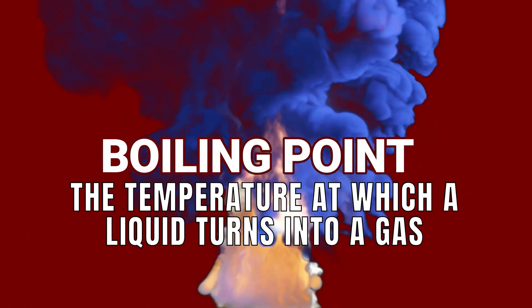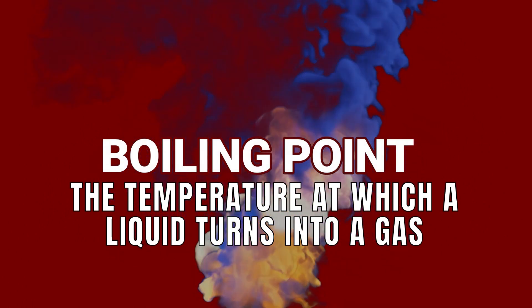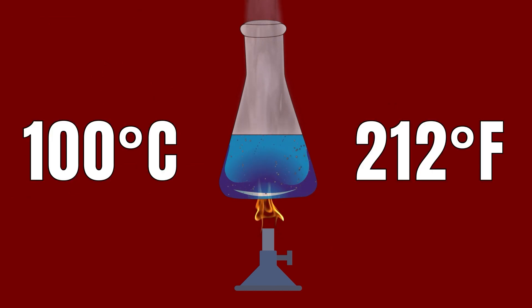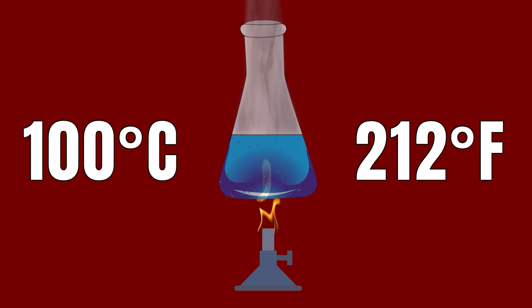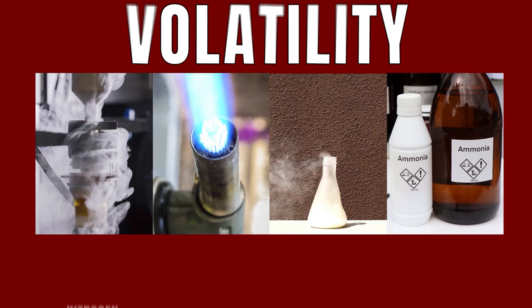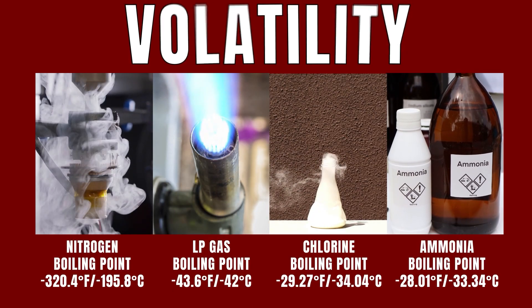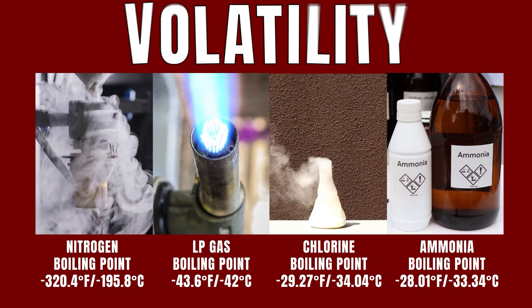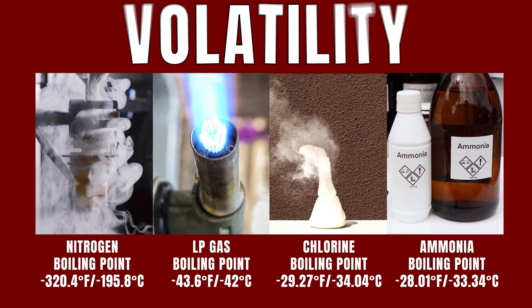The boiling point is the temperature at which a liquid turns into a gas. Staying with the water example, the boiling point of water is 100 degrees Celsius or 212 degrees Fahrenheit. If you heat water to this temperature, it will turn into steam. The boiling point can tell us about a substance's volatility — substances with low boiling points are more volatile and can easily turn into gases. They usually have a much higher vapor pressure.